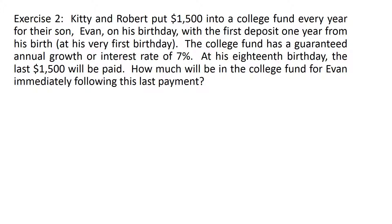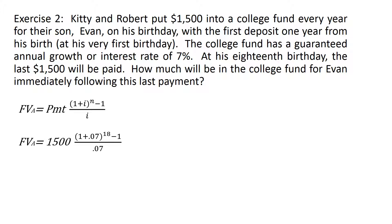You might want to pause the video and try to solve it using the future value of an annuity equation, then come back to check the answer. Here is how to solve it: plug into the future value of an annuity equation. The payment is $1,500, the interest rate i is 0.07 (seven percent), and n is 18 years — from his very first birthday until his 18th birthday. The answer is $50,998.50.